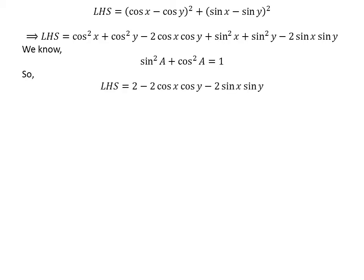Applying this identity, the left hand side becomes: 2 minus 2 times cosine x times cosine y minus 2 times sine x times sine y.